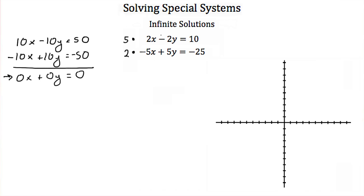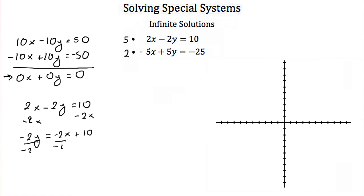So let's graph these and see what they look like. For the first equation, 2x minus 2y equals 10, I subtract 2x from both sides to get negative 2y equals negative 2x plus 10, then divide by negative 2. We get y equals 1x minus 5. Our y-intercept is negative 5, so we go to negative 5 on the y-axis. Our slope is 1, so we go up 1 and over 1 to get another point, then connect them.